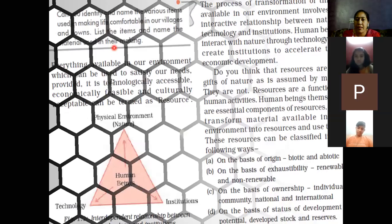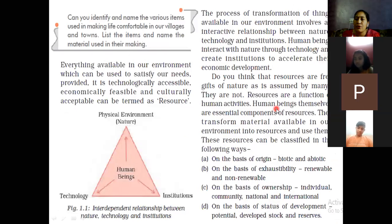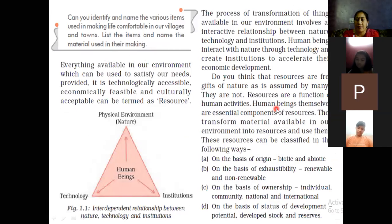Technologically accessible means we have to have sufficient technology; with the help of technology we can use that resource. Number two, economically feasible means that resource must give us economic benefit — it must be usable and provide monetary value for us. Third, culturally acceptable means society has to accept it as a resource. For example, gold is accepted by society — it has economic value and we use it technologically.